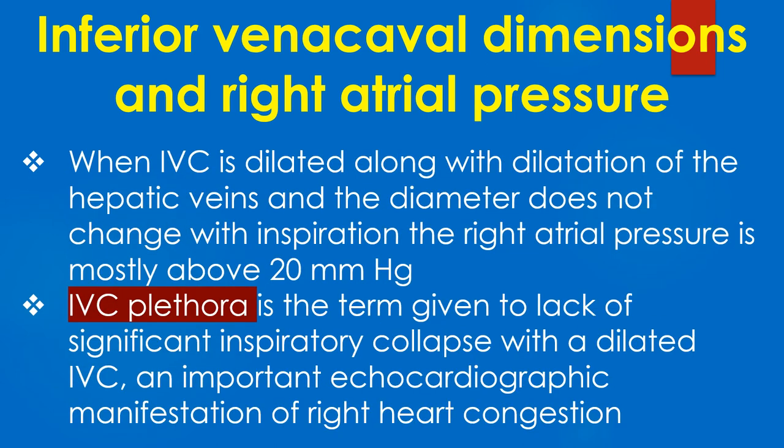When the IVC is dilated along with dilatation of hepatic veins and the diameter does not change with inspiration, the right atrial pressure is mostly above 20 mmHg. IVC plethora is the term given to lack of significant inspiratory collapse with a dilated IVC, and is an important echocardiographic manifestation of right heart congestion.